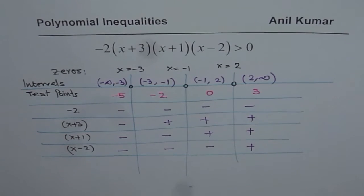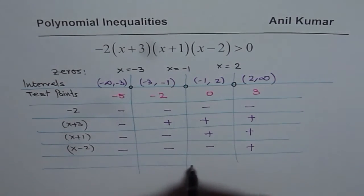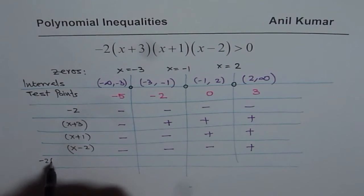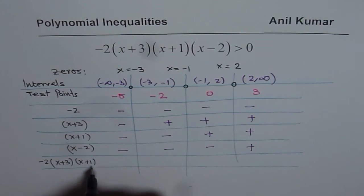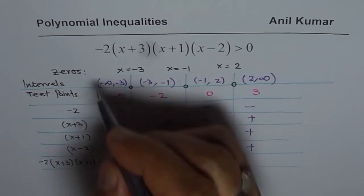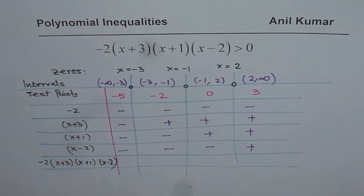Now within these intervals, how will the function be? Function is the product of all this. Our function here is minus 2 times x plus 3 times x plus 1 times x minus 2. Now how can you tell me how will the sign change? So let's write from left to right.